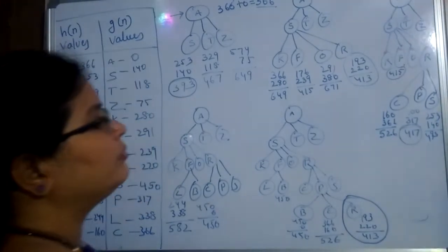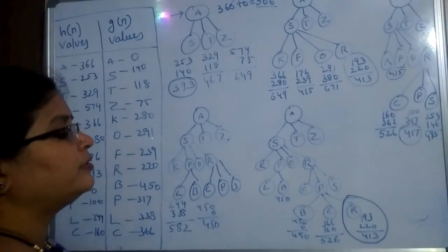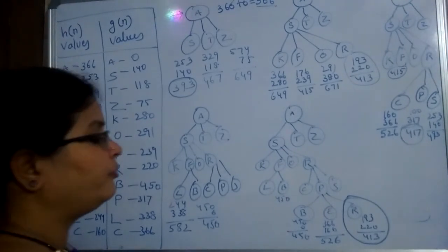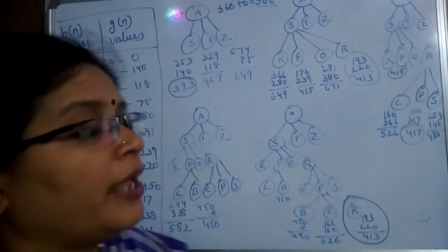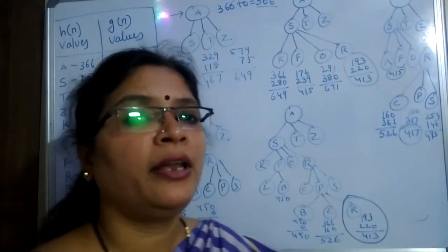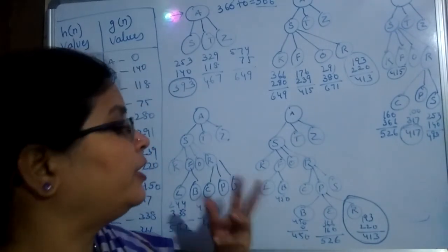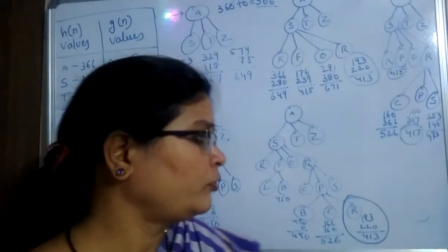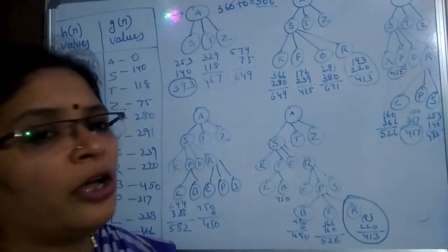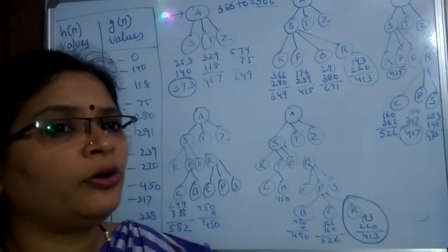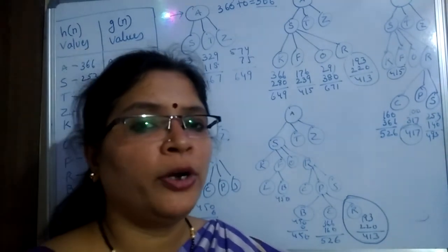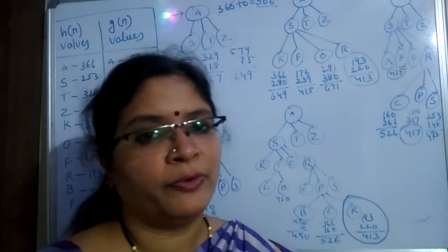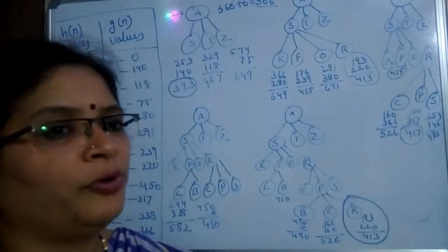Like that it continues. This is the A star algorithm. Wherever we find the minimum value, there it stops. So this is the A star algorithm. In the coming video, we talk about the recursive best first search algorithm and memory bounded heuristic techniques also we will see. Thank you for watching.